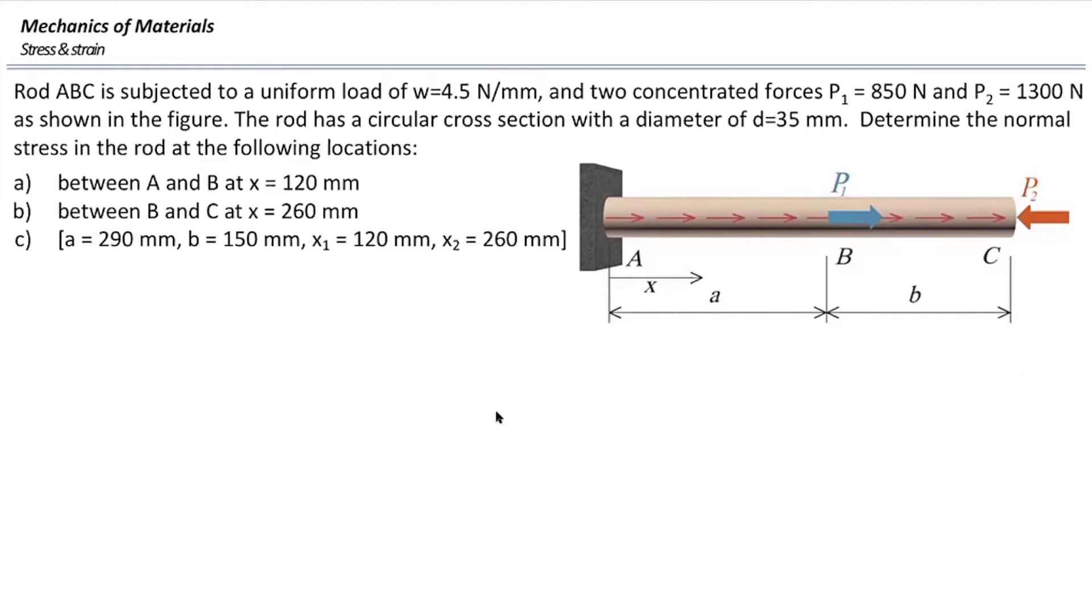Given that, we want to understand how much are the stresses at two different locations shown by X1 and X2. X1 is a cut section located 120 millimeters to the right of the support, and the other point is located 260 millimeters to the right of that support.